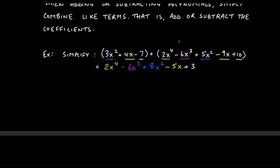Adding the coefficients: 3 plus 5 is 8, so I get 8x squared. Then for the x terms I have positive 4x and negative 9x, so 4 minus 9 is negative 5, giving me negative 5x. Finally the constants: negative 7 plus 10 is positive 3. So the answer is 2x to the fourth minus 6x cubed plus 8x squared minus 5x plus 3.